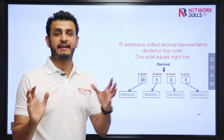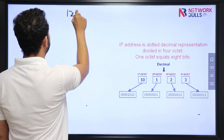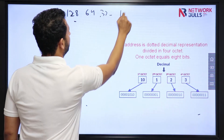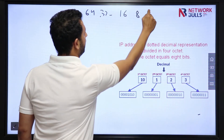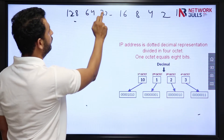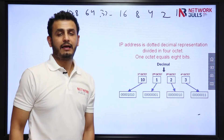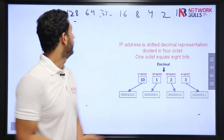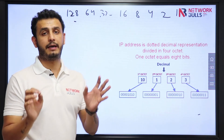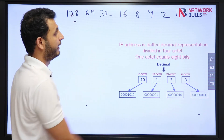We represent 8 bits like this: 128, 64, 32, 16, 8, 4, 2, 1. That gives us 8 bit positions. 1 is the least significant bit and 128 is the most significant bit. Or you can say this is the first bit and this is the eighth bit.